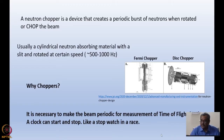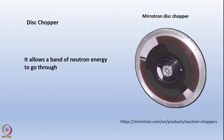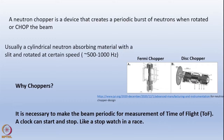There is a disc chopper through whose slot neutrons can pass, and there is also something called a Fermi chopper which I will come to shortly. Usually a cylindrical neutron-absorbing material with a slit is rotated - we can go up to 20,000 rpm. However, there is a mechanical limitation on rotation speed, which limits how many neutron pulses you can get per second.